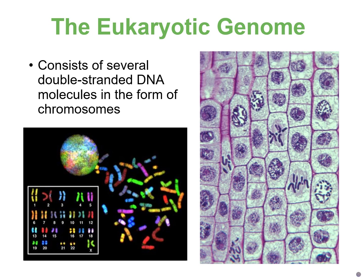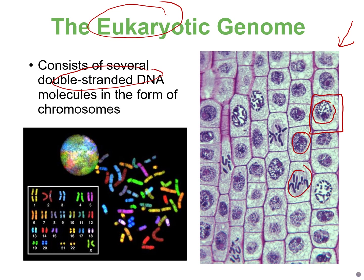In contrast to prokaryotes, remember that eukaryotes do have a nucleus and they usually have several double-stranded linear chromosomes. On the right we have a picture of a plant cell and I can see the nucleus where the envelope has broken down in different phases of the cell cycle. On the left here we have a picture of chromosomes from a female somatic cell. In humans, we have 23 pairs of chromosomes — 46 total chromosomes.